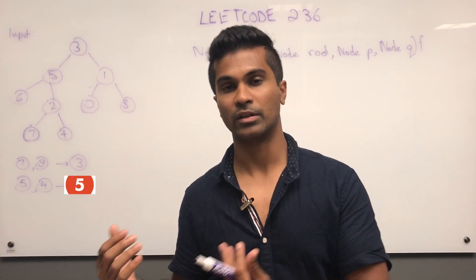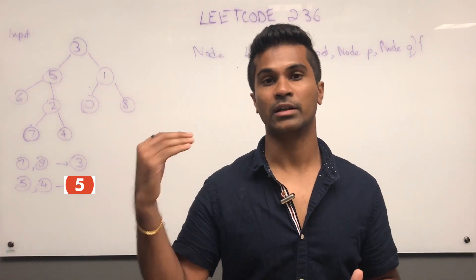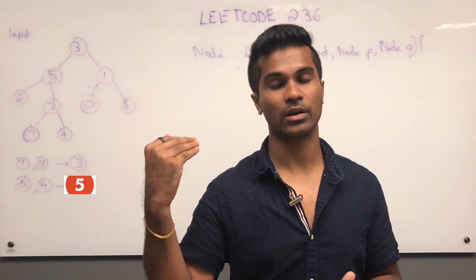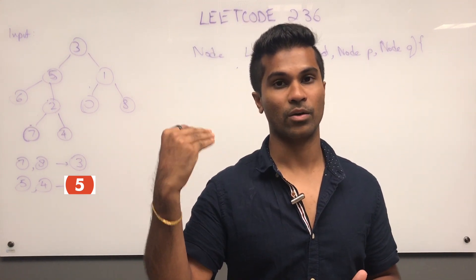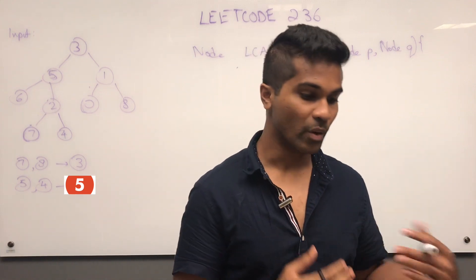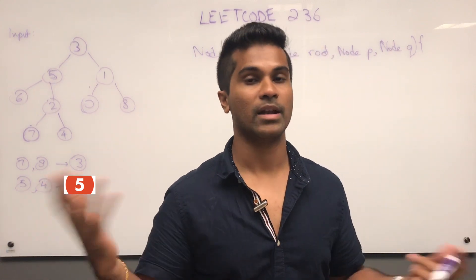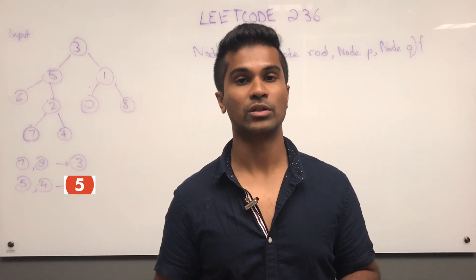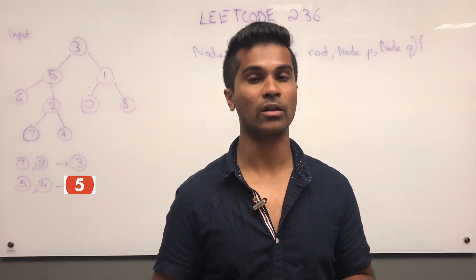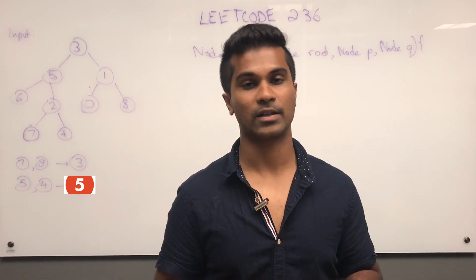If one of the children is null and the other one is not, that's still fine — it's going to return the node which is not null. And if both of them are null, then you just return null, and that's going to be fine.